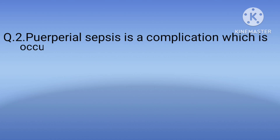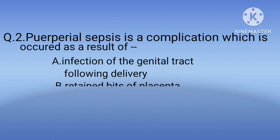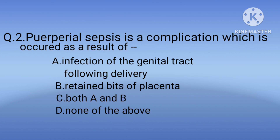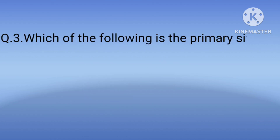Question 2: Puerperal sepsis is a complication which occurs as a result of — option A: infection of the genital tract following delivery, option B: retained bits of placenta, option C: both A and B, option D: none of the above. The correct option is C, both A and B. Puerperal sepsis is primarily treated with broad-spectrum antibiotics given intravenously.